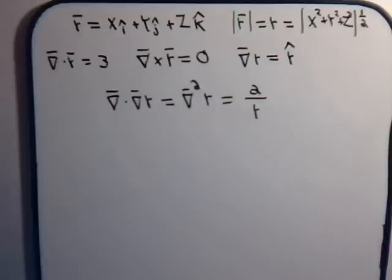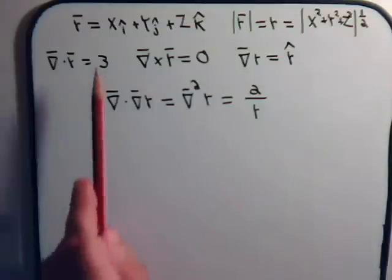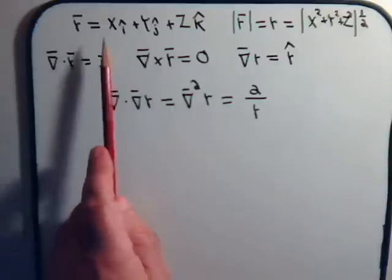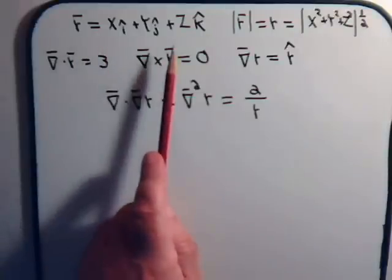In this video we're going to consider one more property of the position vector. By its definition, the position vector points to a certain point in two-dimensional space. So for its i, j, and k components it's going to simply be x, y, and z.